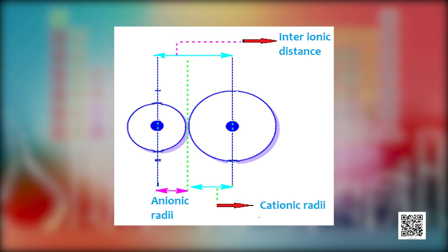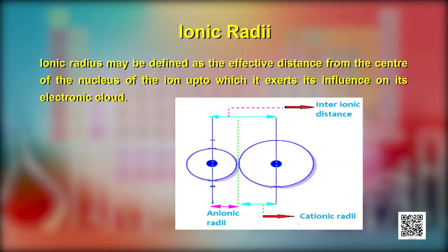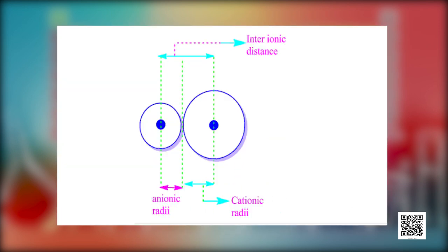Now let us learn about the variation of the second property — ionic radius. A positive ion, or cation, is formed when a neutral atom loses one or more electrons, while a negative ion, or anion, is formed when a neutral atom gains one or more electrons. The effective size of these ions is termed ionic radius, defined as the effective distance from the center of the nucleus of the ion up to which it exerts its influence on its electronic cloud. A cation is always smaller than its parent atom, whereas an anion is always larger than its parent atom.